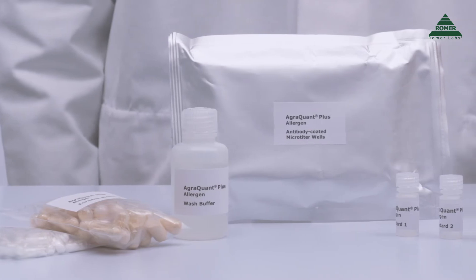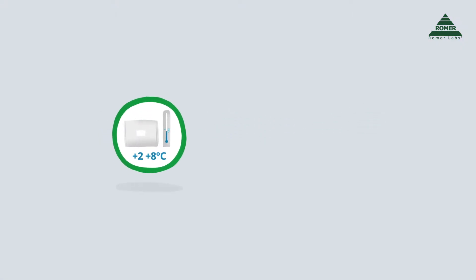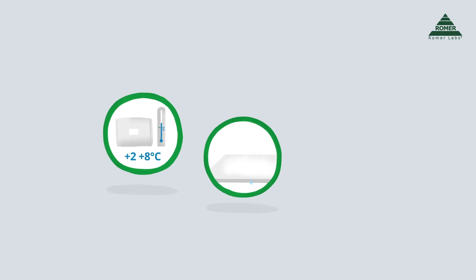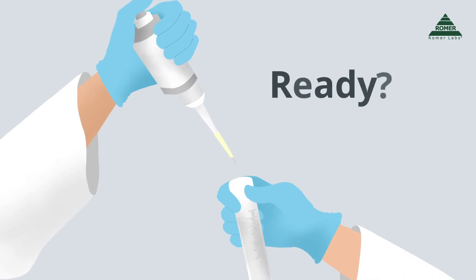Before we start, there are a couple of things worth mentioning. AgriQuant Allergen Kits require refrigerated storage at 2 to 8 degrees Celsius. Make sure you clean the surface where you will work and the tools you will use. We also recommend that you wear protective gloves and change them before each new stage of the test. Ready? The test works in just a few easy steps.